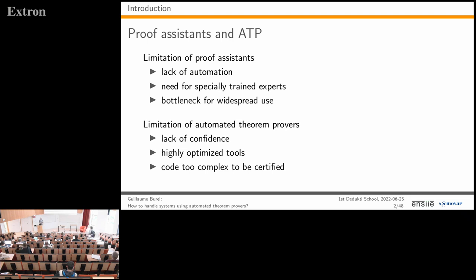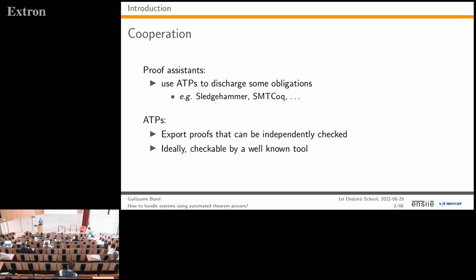We would like to have the best of both worlds. To do that, we want cooperation between proof assistants and automated theorem provers. For instance, in proof assistants you can discharge proof obligations to ATPs. In Isabelle, the Sledgehammer tactic calls automated theorem provers to find a proof, which is then reconstructed in Isabelle. There is also the SMT Coq plugin for Coq, and other works in the same vein.